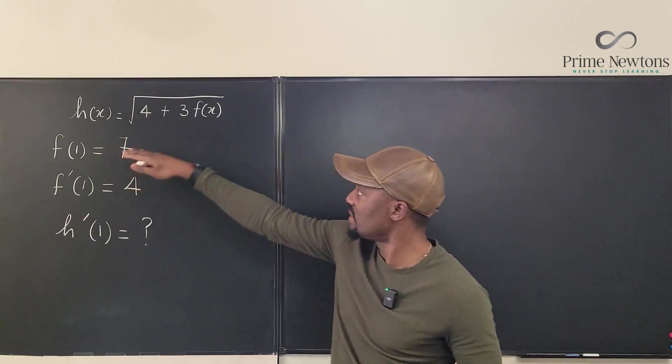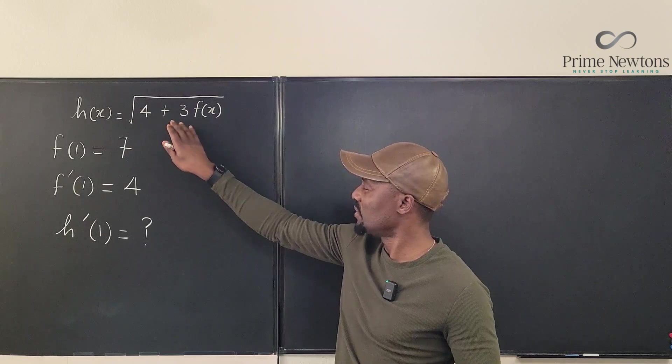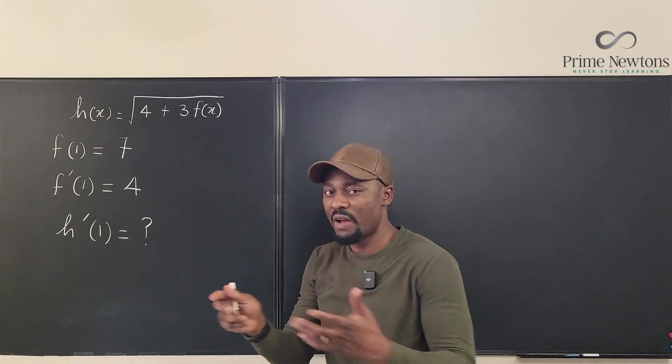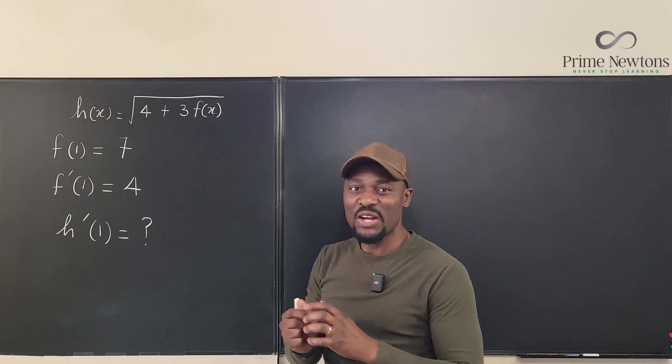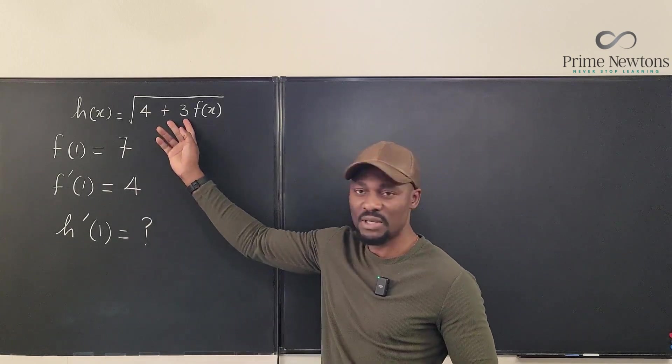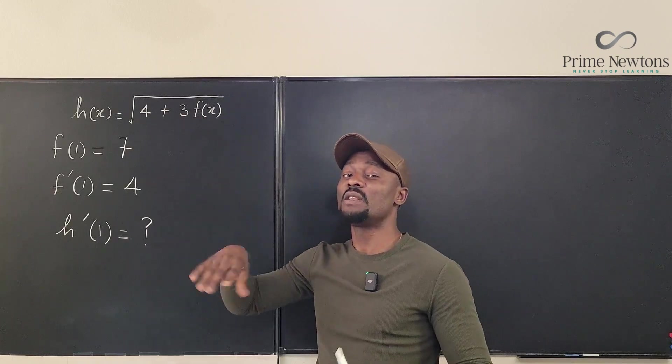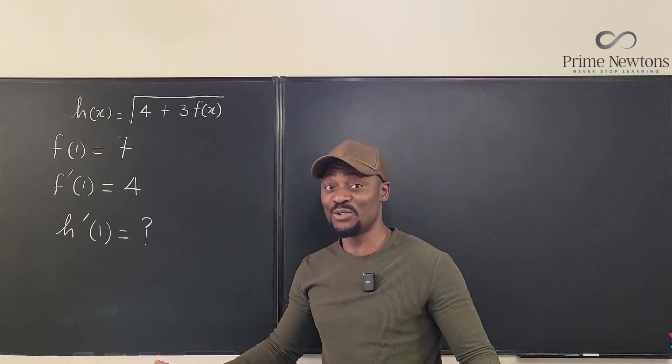So this is the function h(x) is the square root of 4 plus 3 times f(x). So we have two functions here and it looks like we cannot just do it straight away because this is a composition. So we might need to use the chain rule. We definitely need to use the chain rule.